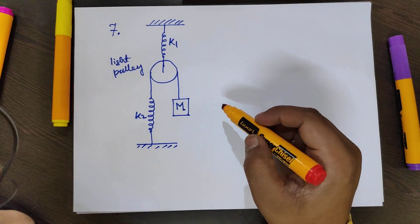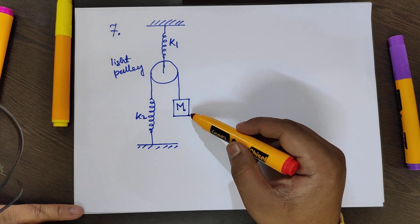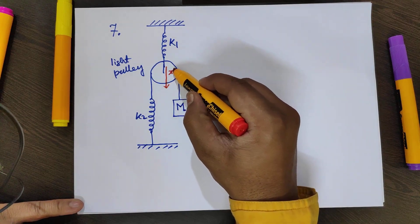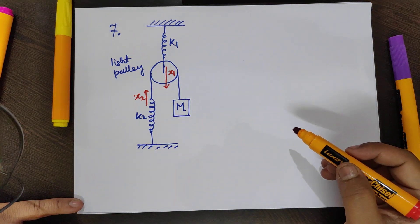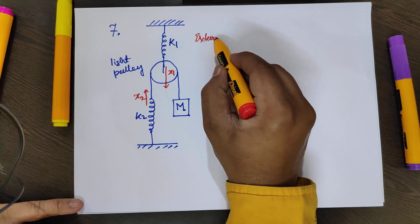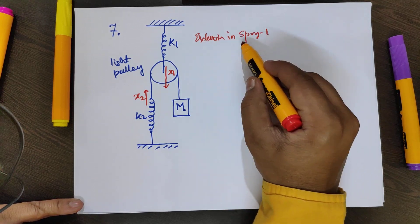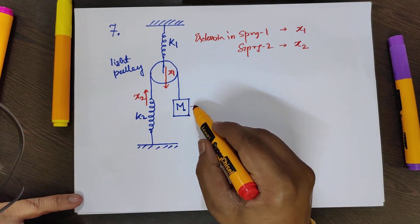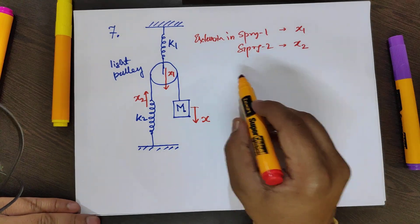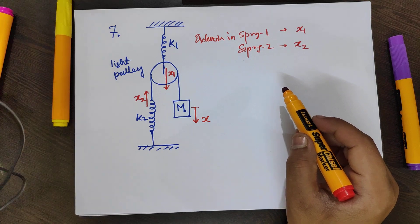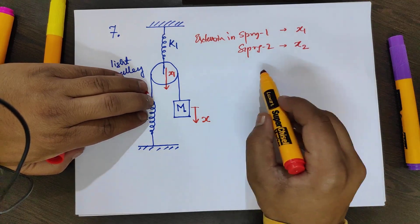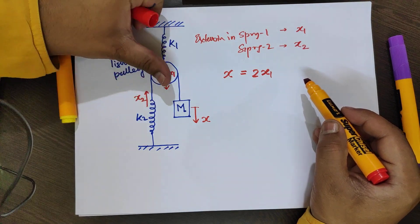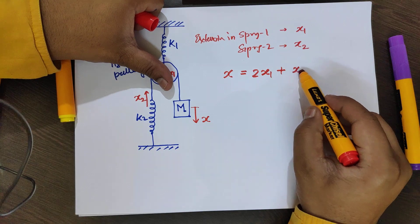The displacements are a bit more tricky here — there is no simple x and x/2 relation. Suppose spring 1 stretches by x1 and spring 2 stretches by x2. By superposition, you can find x in terms of x1 and x2. If x2 is not there, x = 2x1; if x1 is not there and only x2 contributes, then x = x2.